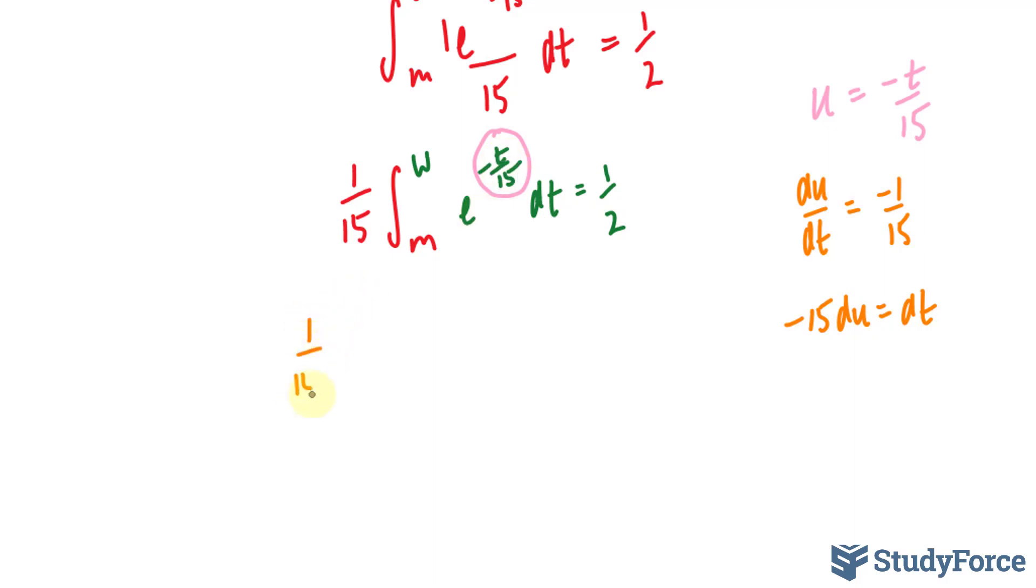This gives us 1 over 15 times the integral from m to w of e to the power of u, times negative 15, du, equals one-half.